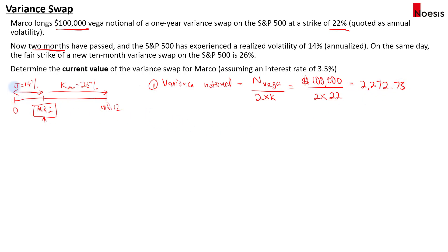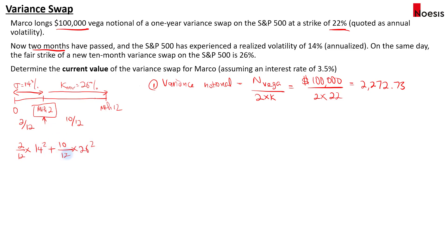The next thing we need to do is take the average variance for the 12-month period. The weightage assigned is 2/12 for the realized variance and 10/12 for the fair strike of a new variance swap. So the weighted average variance is 2/12 × 14² + 10/12 × 26², which equals 596.